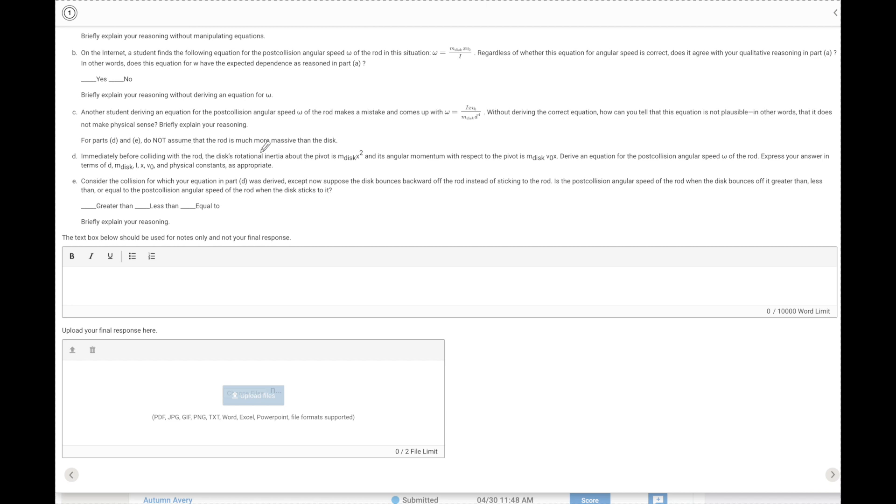So let's look at part D now. Immediately before the collision with the rod, we have a moment of inertia. So I is equal to MX squared, which is MR squared. That's pretty accurate. And the angular momentum with respect to the pivot, so L is going to be equal to MV0X. Derive an equation for the post-angular speed W of the rod expressed in these variables right here and any physical constants that are appropriate. Okay. All right. So we can do that pretty easily.